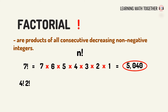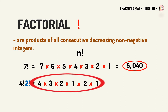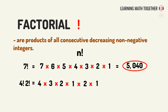Next example, we have 4 factorial times 2 factorial. To simplify, we first list the numbers of 4 factorial: 4 times 3 times 2 times 1. Then we proceed to 2 factorial: 2 times 1. We then get the product of all the numbers. So 4 factorial times 2 factorial is equal to 48.